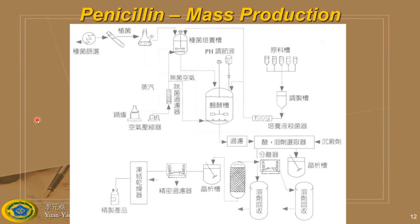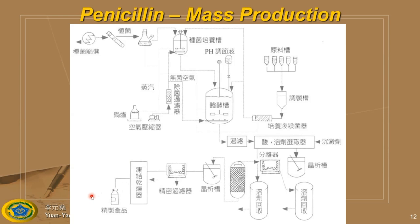That's clearly not a clever way to do mass production. The clever way is to design a process — for example, reactors in series: reactor one, two, three, four, five. You feed the raw material into the first reactor, it flows through each reactor, and penicillin continuously comes out the other side in large quantities.